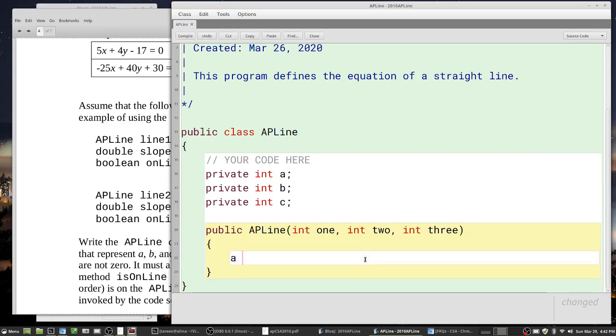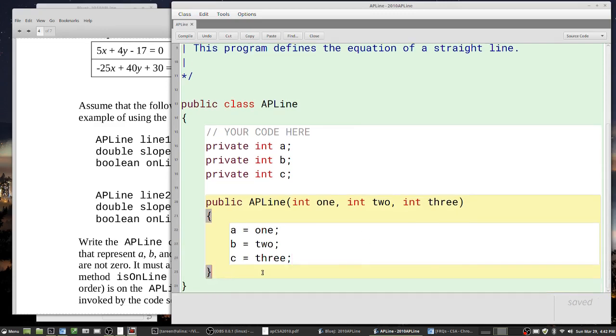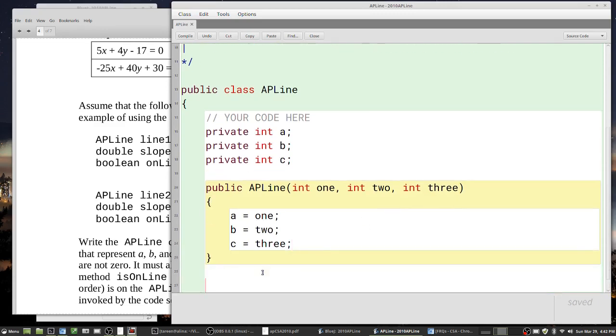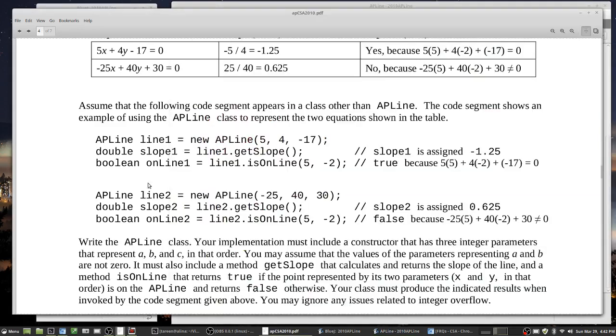I just set these equal, so a gets the value of 1, b gets the value of 2, and c gets the value of 3. So we got instance variables done, we got the constructor done.